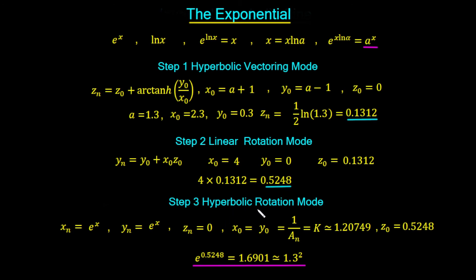Finally, we take 0.5248 and raise it to the power of e in hyperbolic rotation mode. We set x₀ = y₀ = 1.20749 and z₀ = 0.5248 (the output from the previous stage). This should give us e raised to the 0.5248, which equals approximately 1.6901 — which is approximately 1.3 squared. These are the numbers we expect to get from the CORDIC algorithm in steps 1, 2, and 3.